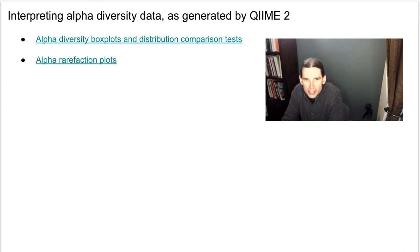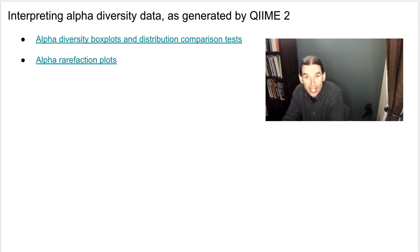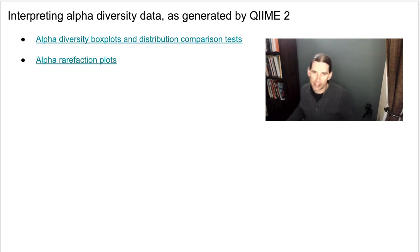Now let's start talking about how we would interpret some alpha diversity data, focusing on some QIIME 2 visualizations. These are visualizations you will encounter if you're working through the QIIME 2 tutorials or on the final assignment for class. Spending some time understanding how these visualizations help us gain biological insight will help you in your own microbiome analysis or in completing the final assignment.